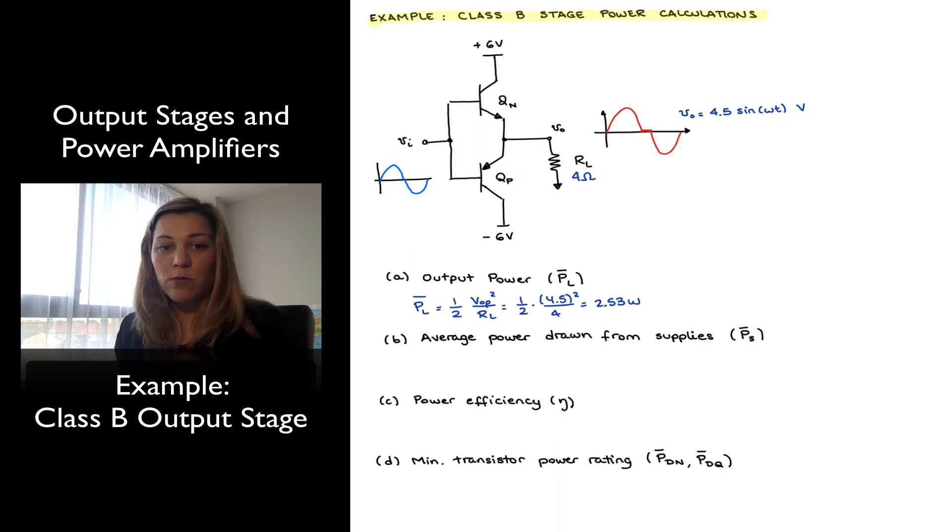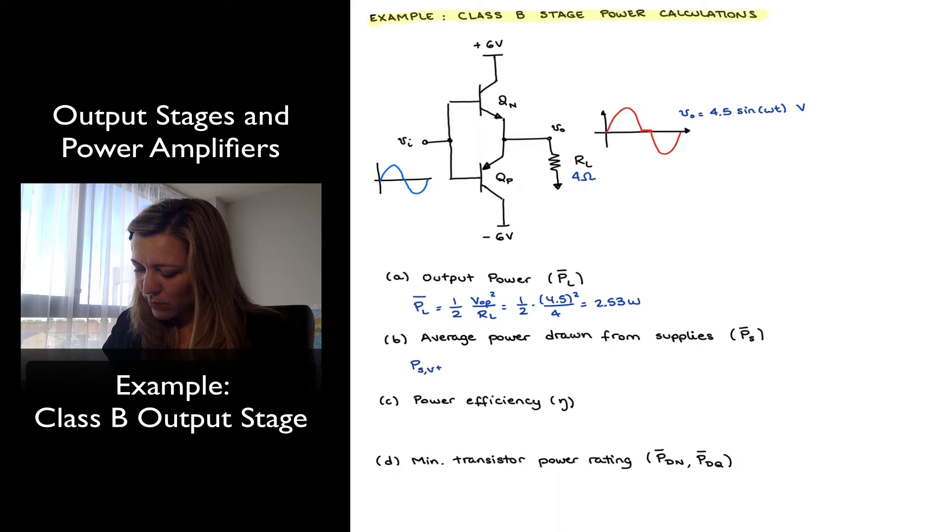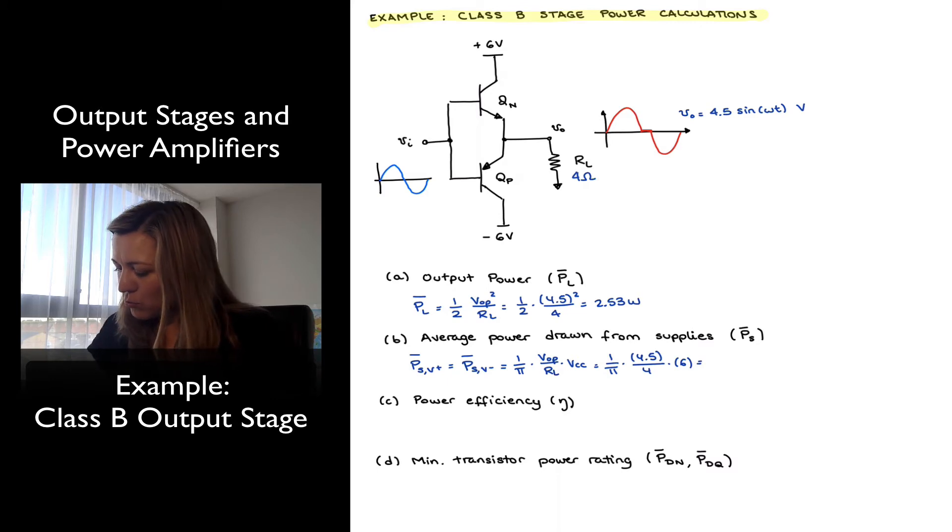Next, I want to find out the average power that is drawn from the supplies over one cycle. There are two supplies. The positive supply is going to deliver power during the positive-half cycle. The negative supply is going to deliver power during the negative-half cycle. Since they are symmetrical supplies, each of them is going to deliver the same amount of average power over its particular half cycle. The supply power from V-plus average equals the supply power from V-minus average, and that is equal to 1 over pi times VOP divided by RL times VCC. Or 1 over pi times 4.5 divided by 4 times 6, and that comes out to 2.15 watts. That's the power delivered by each supply over half a cycle.